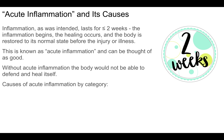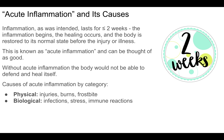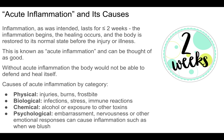Causes of acute inflammation by category: Physically, there are injuries, burns, and frostbite. Biologically, infections, stress, and immune reactions. Chemically, alcohol, exposure to other toxins such as chemical or environmental toxins, or smoke from cigarettes. And then there are psychological reasons for inflammation, such as embarrassment, nervousness, or other emotional responses, which cause inflammation that presents as blushing.